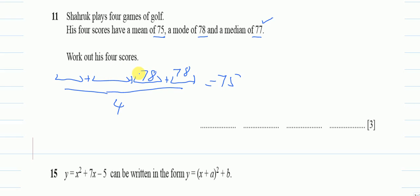What number can I have here to get 77? It's 76, because 76 plus 78 divided by 2 to get the middle number will give the median of 77. So now I have at least three values already. For one value, we can just put x over here.